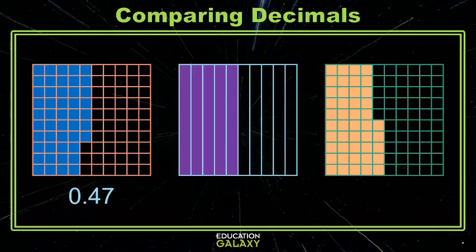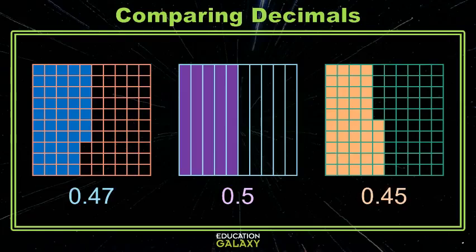In the middle, I have my grid separated into 10 equal size pieces, and five of those are shaded. So that's the decimal 5 tenths. On the right, I have one, two, three, four of those columns shaded, and then five in the next column. So that's 45 pieces out of the hundred or 45 hundredths.